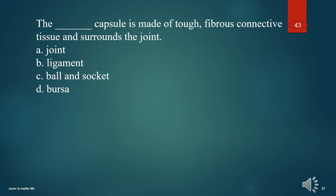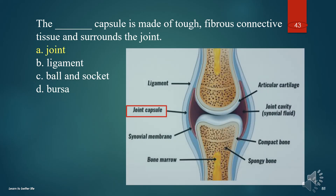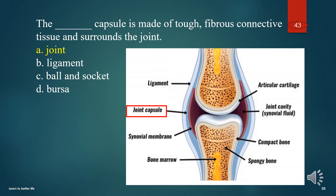The what capsule is made of tough, fibrous connective tissue and surrounds the joint? A. Joint. B. Ligament. C. Ball and socket. D. Bursa. The answer is A. Joint capsule.